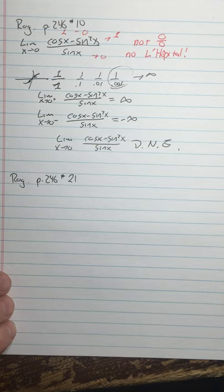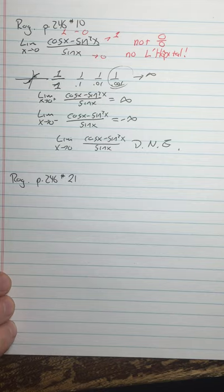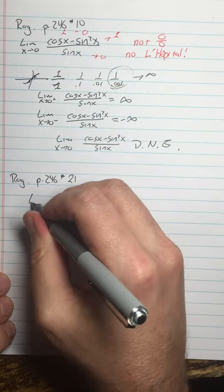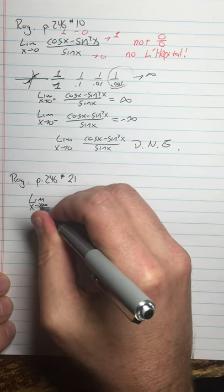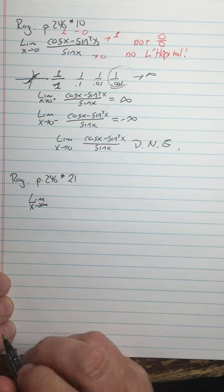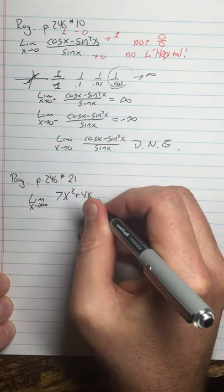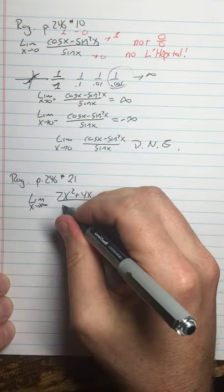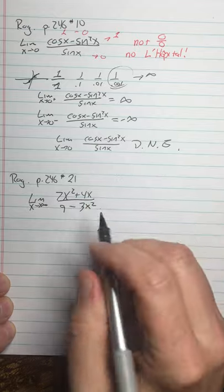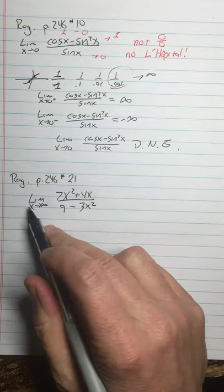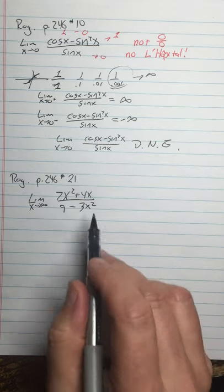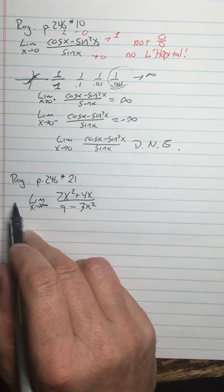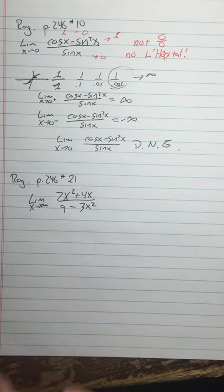Now, one last one I want to look at is number 21, which is actually on page 246 as well. That one says, limit as x approaches infinity of 7x squared plus 4x over 9 minus 3x squared. So a couple of comments. First of all, it's an infinity over infinity form, because you can factor the negative out. Top's going to infinity, bottom's going to infinity. If you factor the negative out of the denominator, factor the whole thing out.